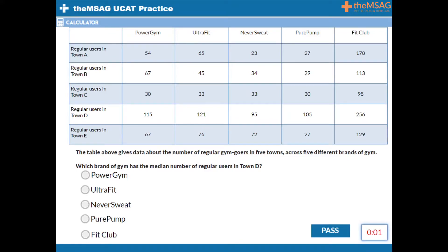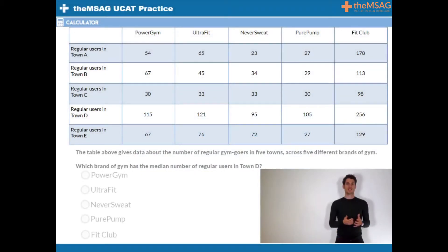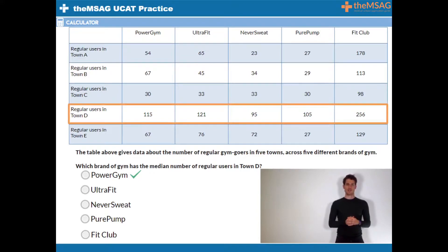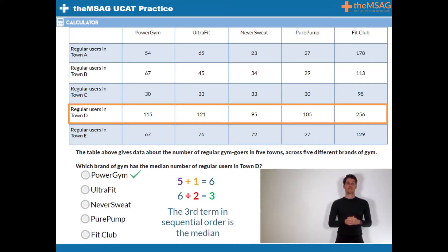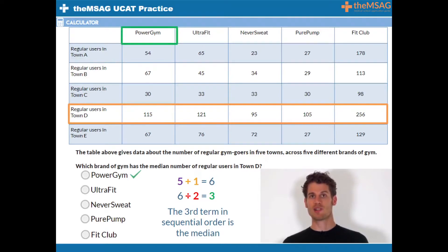The answer is A, Power Gym. Don't waste time writing out the five terms in Town D's row in order. If we add 1 to 5 and then divide the answer by 2, we get 3. The third term is the median. You can find the third smallest term by mentally assessing the terms in Town D's row: 95 is the smallest, 105 is the second smallest, and 115 is the third smallest — which is the same as the third biggest with medians. 115 belongs to Power Gym, and so Power Gym has the median number of users for Town D.